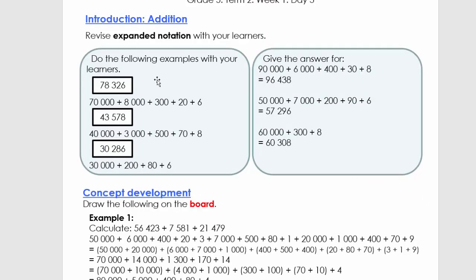Welcome back. With today's addition lesson we're first going to revise place value. We take the number 78 326 and write it in expanded notation: 70 000 + 8 000 + 300 + 20 + 6. The next one is 43 578: 40 000 + 3 000 + 500 + 70 + 8.